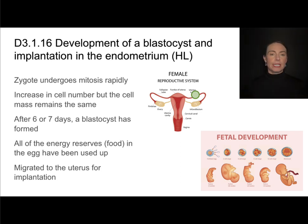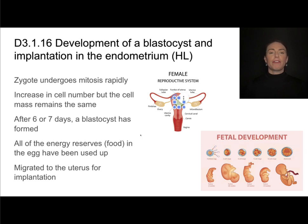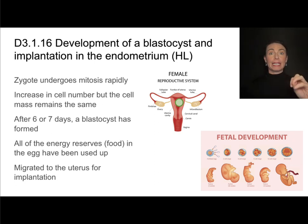After about six or seven days, we get a structure called the blastocyst. While all this cell division is occurring, the embryo has traveled from the oviduct to the uterus. At this point, all of the energy reserves present in the ovum have been used up, and this developing embryo must implant into the uterus in order to find nourishment.